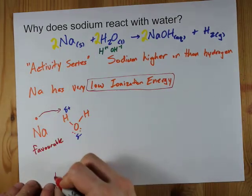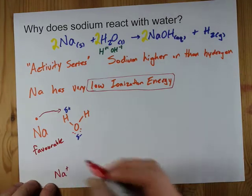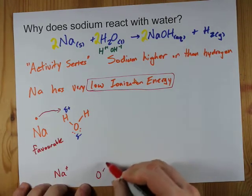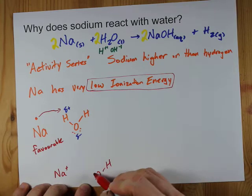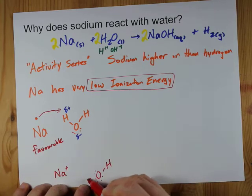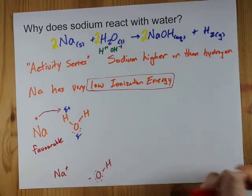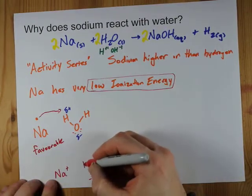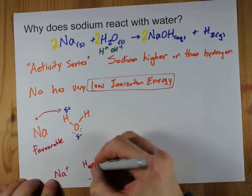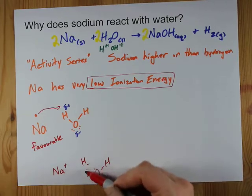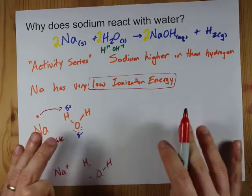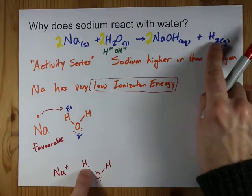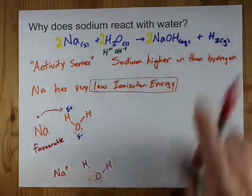Once you do, you end up with an Na⁺ ion. You will eventually end up with an OH⁻ ion — that's where the NaOH comes from. What you don't actually get is an H with a single electron around it; that's too unstable. There's a little bit more going on, mechanism-wise, to get that to combine with another one to make the H₂.